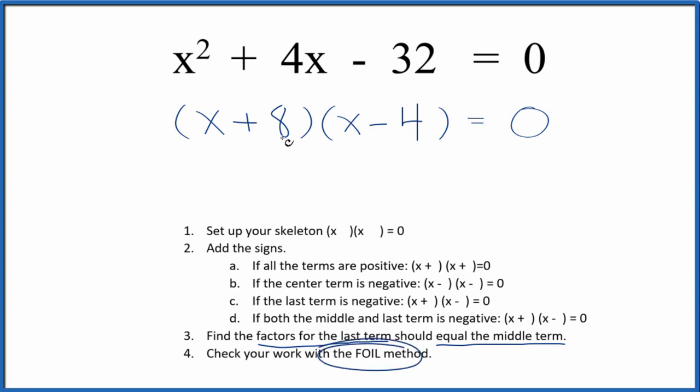But we should check our work with the FOIL method. We have x times x plus the outside terms, x times negative 4. That's negative 4x. Inside, 8 times x. And the last terms, 8 times negative 4 is negative 32. That all equals 0.